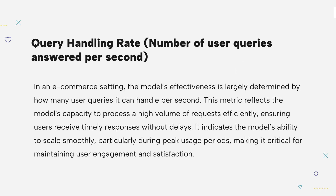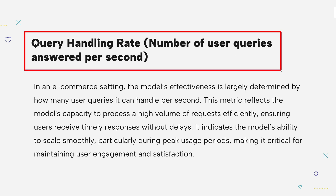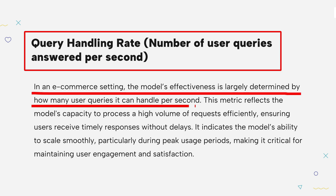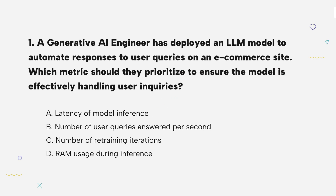The knowledge point of this question is query handling rate. A model needs to handle lots of user questions quickly, especially during busy times. Measuring how many queries it can process per second shows how well it keeps up with user demand. A higher rate means users get fast answers, which keeps them happy. This measures how well the model handles user traffic — the more queries it can answer quickly, the better it performs, ensuring users get responses fast even during busy times.